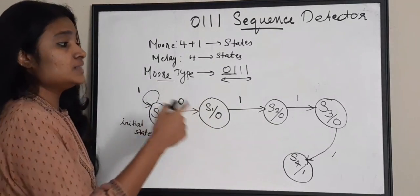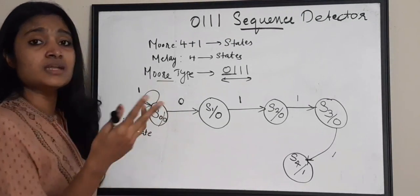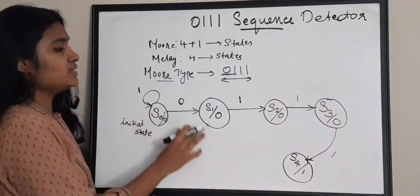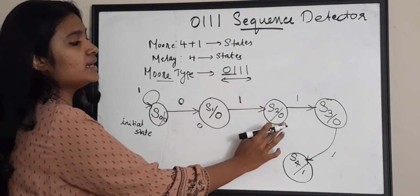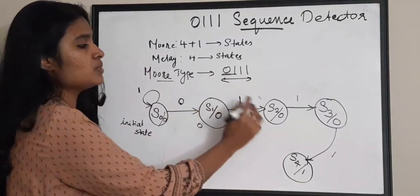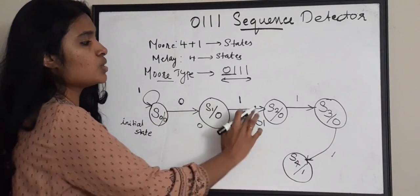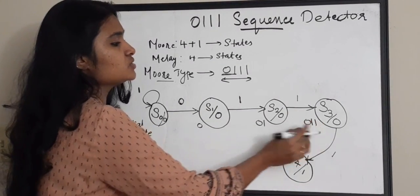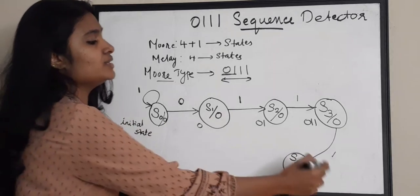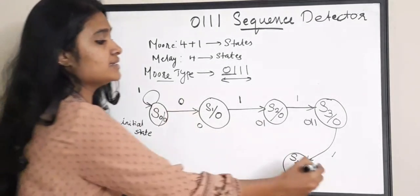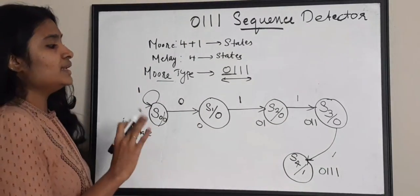Now there are certain left-out cases we have to complete. Before that we need to check at each state what sequence we have in hand. In S1 state it is just a 0. In S2 state you have 0 and 1. In S3 state you have 0 1 and 1. In S4 state you have your sequence entirely: 0 1 1 and 1.